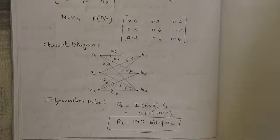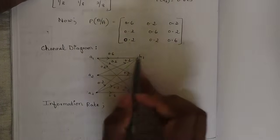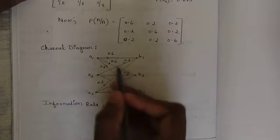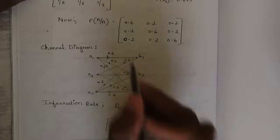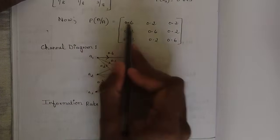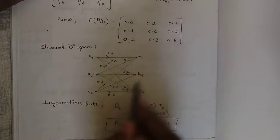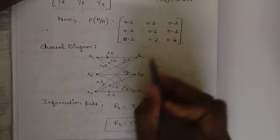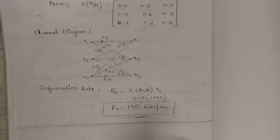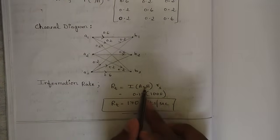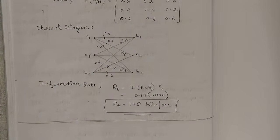With the channel matrix obtained, draw three dots A1, A2, A3 and B1, B2, B3. Since there are no zero values, all nine connections are present. A1→B1: 0.6, A1→B2: 0.2, A1→B3: 0.2; A2→B1: 0.2, A2→B2: 0.6, A2→B3: 0.2; A3→B1: 0.2, A3→B2: 0.2, A3→B3: 0.6. Finally, the information rate Rt = I(A,B) × Rs = 0.17 × 1000 = 170 bits per second.